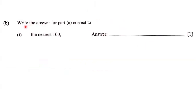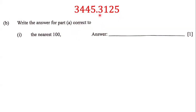Next, the question states: write the answer for part A correct to the nearest 100. The answer we got in part A is 3,445.3125, and they want us to round that to the nearest 100. Now, 5 is in the ones place, this 4 is in the tens place, and this 4 is in the hundreds place, so we're going to circle this 4.